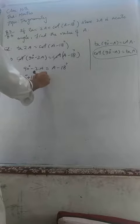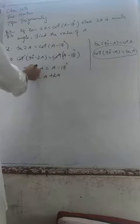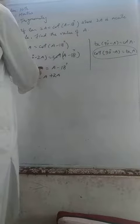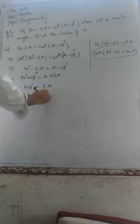Moving the terms: 90 plus 18 equals A plus 2A, which gives us 108 equals 3A.